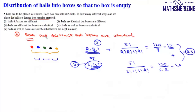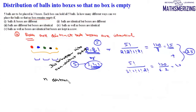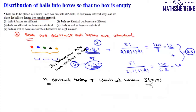So the number of ways of distributing five distinct balls in three identical boxes is 25. This problem is actually a distribution problem, which we generally study in combinations as distribution into non-distinct groups. Now suppose we have N distinct balls and R identical boxes — the number of ways to distribute them so that no box is empty can be found using S(N, R), which is the Stirling number of the second kind.